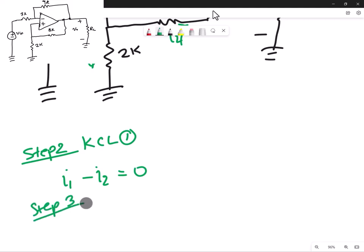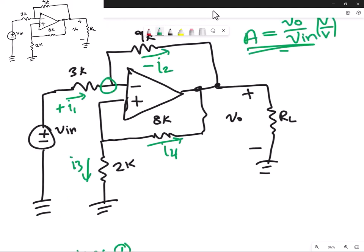All right, step three, we're going to define or rewrite KCL in terms of the voltages going across the resistors. So voltages and resistance instead of just current. That means our voltage Vin is going to be here, and this voltage will subtract.